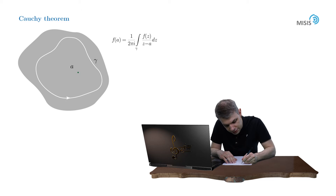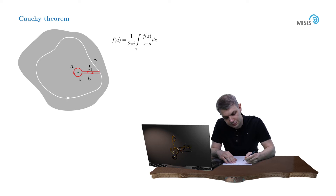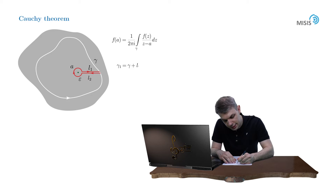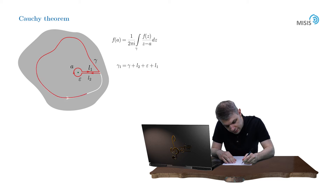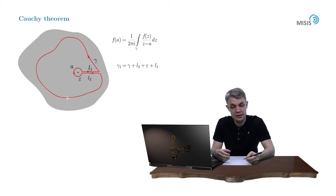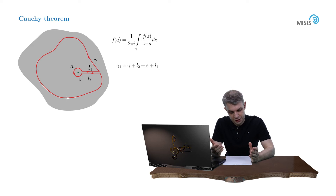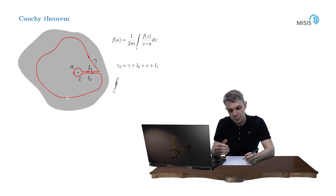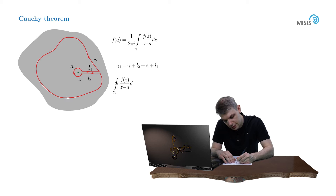So let's add two linear segments to the contour heading to point A, and complement them with an infinitesimal circle of radius epsilon around point A. We label the upper linear segment L1 and the lower one L2. Now consider a new closed contour gamma1, which consists of contour gamma, linear segment L2, the infinitesimal circle epsilon, and linear segment L1 — highlighted in red. Our integrand f(z)/(z minus A) is holomorphic inside this new contour, because point z equals A is now outside it. Therefore we can apply Cauchy's integral theorem, and the closed contour integral over gamma1 equals zero.